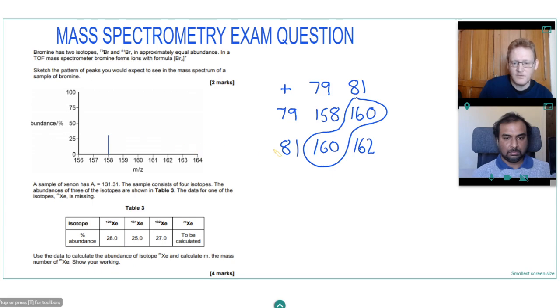So we'll draw a line to 25. And then the same for 162 with a 1 in 4 chance of getting that. And for 160, then we have twice the chance or 2 out of 4 chance of getting 160, which is 50%. And we put that there. And that would be our sketch for the mass spectrum of Br2+.